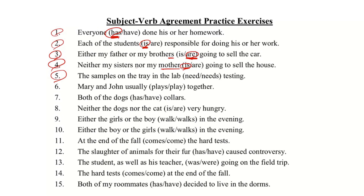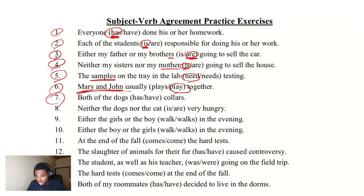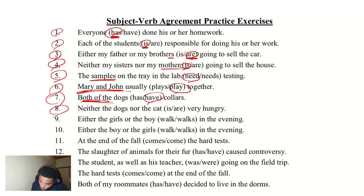Number six: Mary and John — two persons, so that's plural, 'play.' Number seven: both of the dogs — that's two dogs, so 'have.' Number eight: neither the dogs nor the cat — working with 'neither,' take the second subject, 'cat' is closer to the verb, so singular. Number nine: either the girls or the boy — same rule, 'walks.'